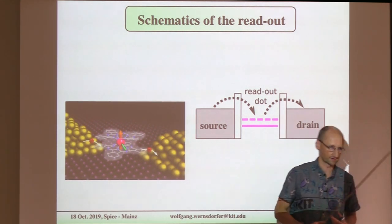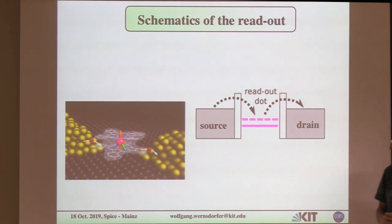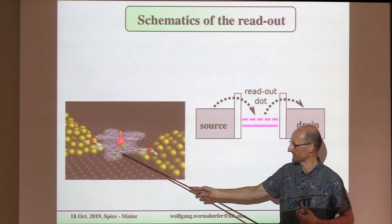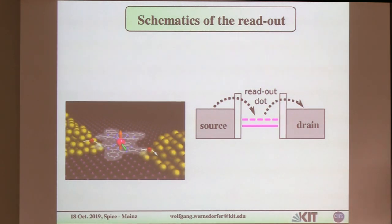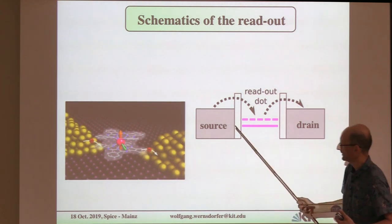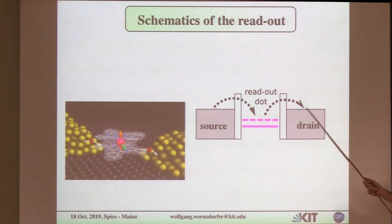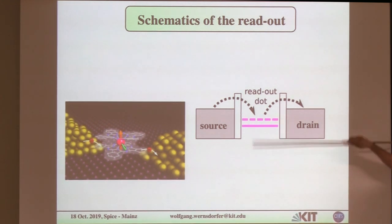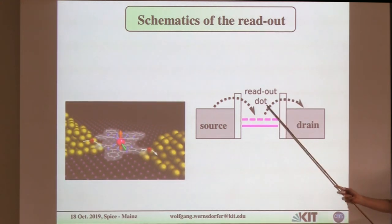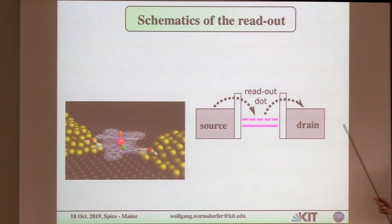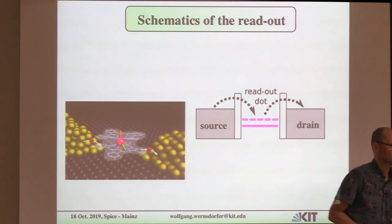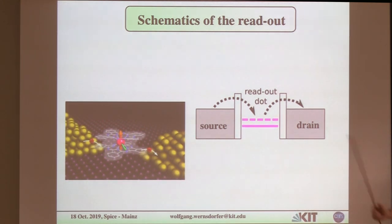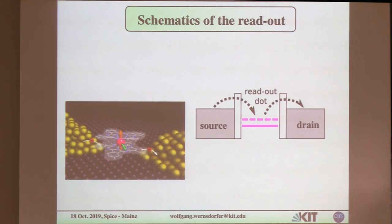The electron will live somewhere on the ligands, where pi-pi systems keep these electrons for a certain time. A physicist calls this a quantum dot — just a dot with levels that I can charge more or less with electrons. This quantum dot we also call the readout dot. We want a very stable, nice quantum dot with a narrowly defined energy that doesn't jump around — we don't want charge noise from two-level systems nearby.